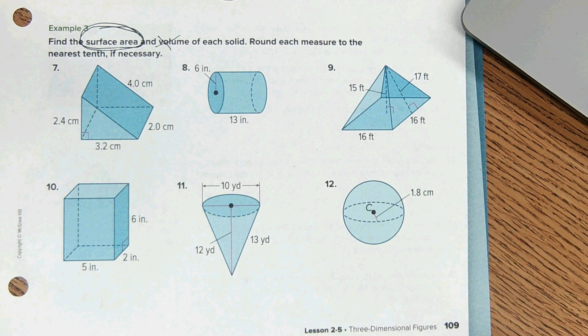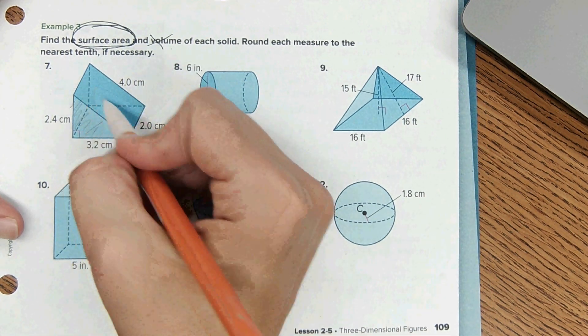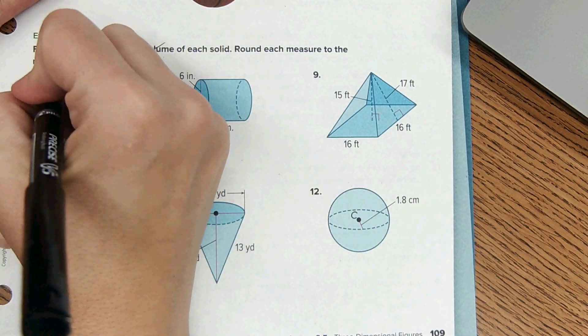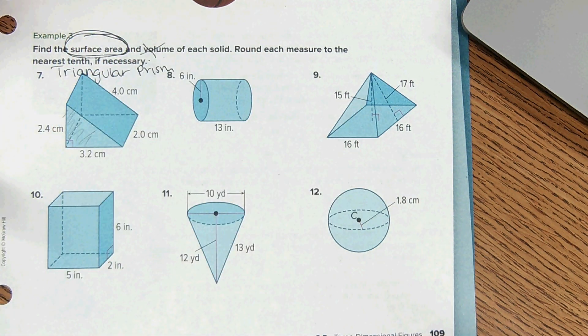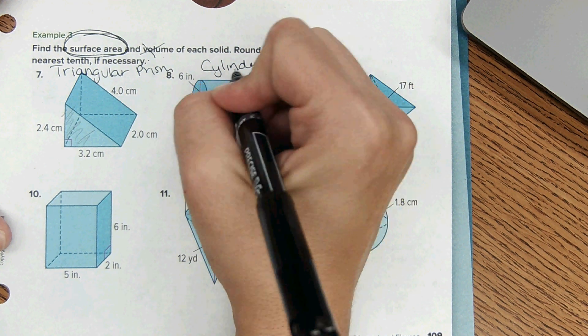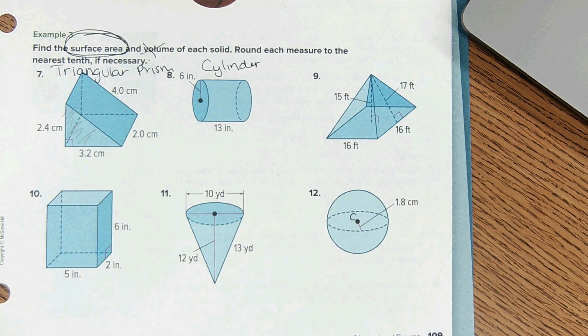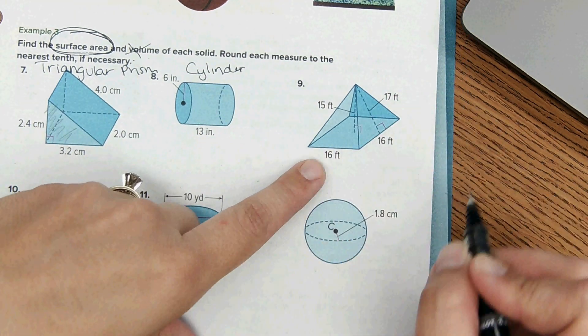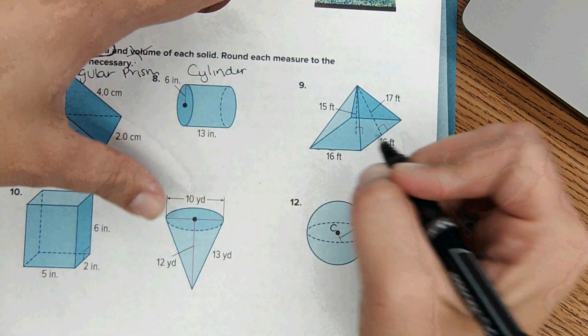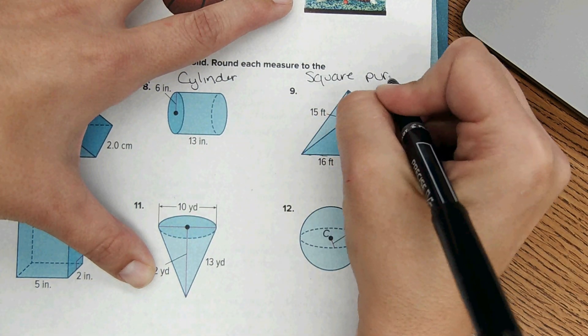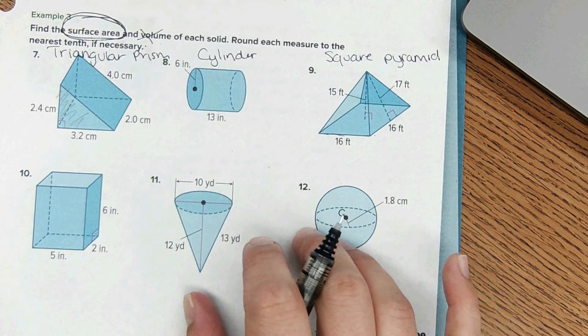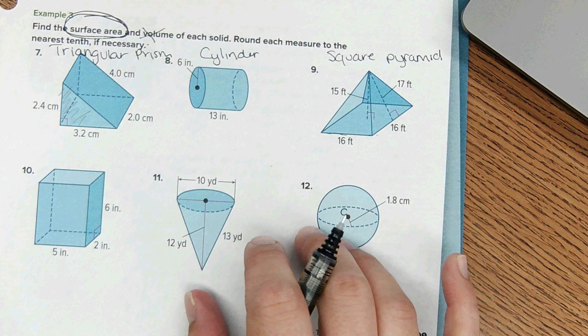Then this one again, a rectangular prism. Down here we have this one with the triangle base and rectangles all around - that's a triangular prism. Then we have a cylinder. Right here it's a pyramid, and the bottom we can see the dimensions 16 by 16, so that's a square base, so it's a square pyramid.